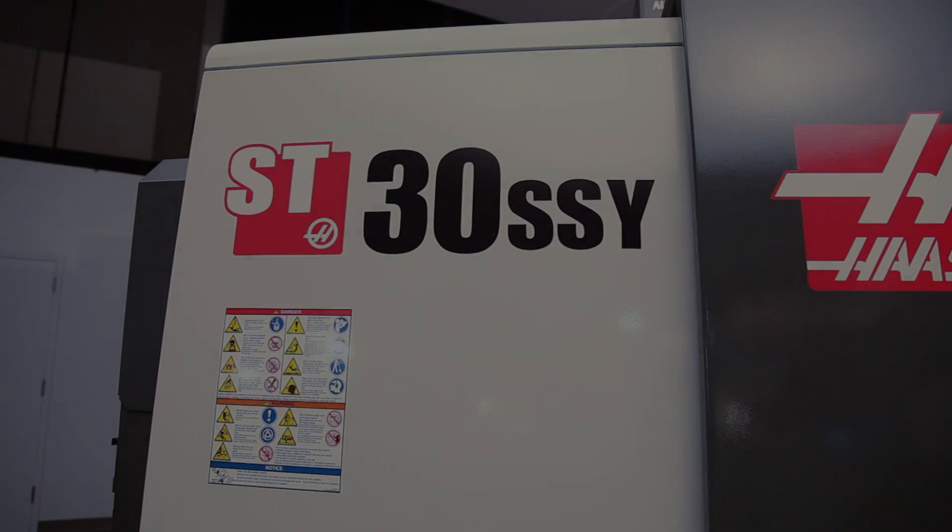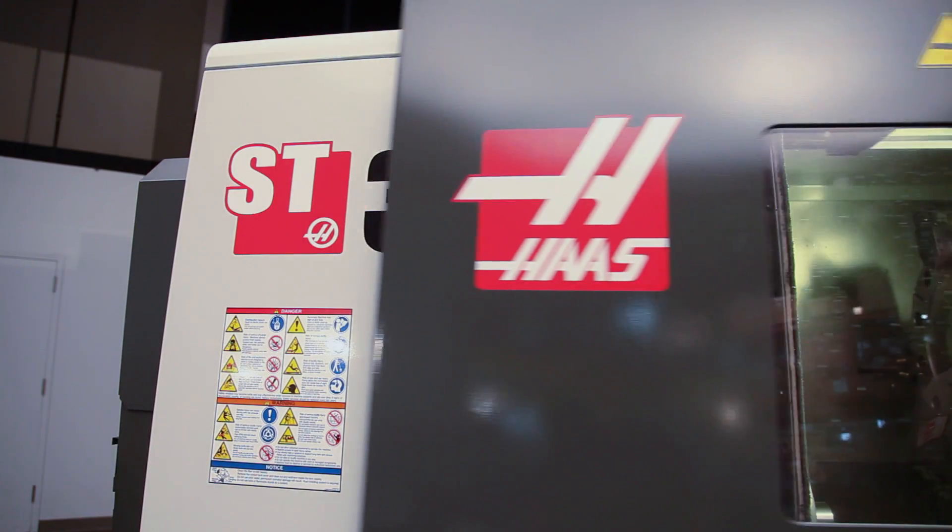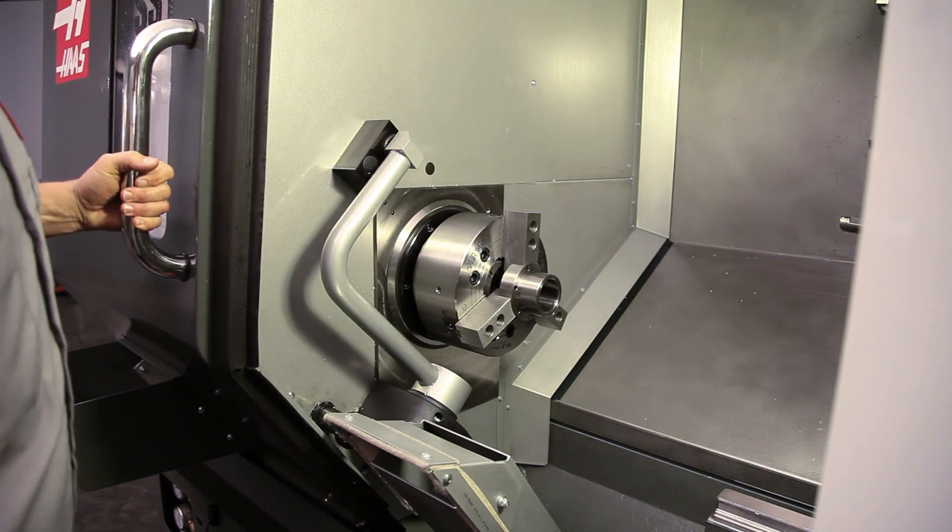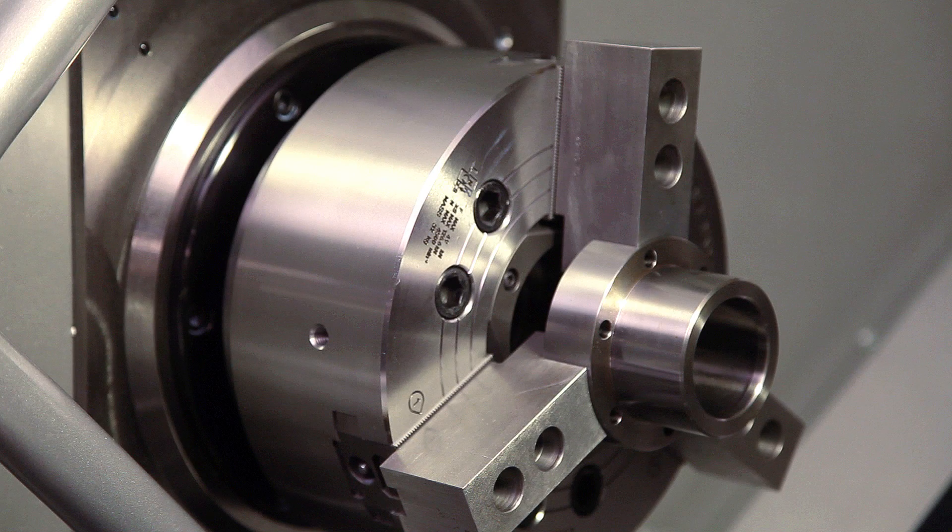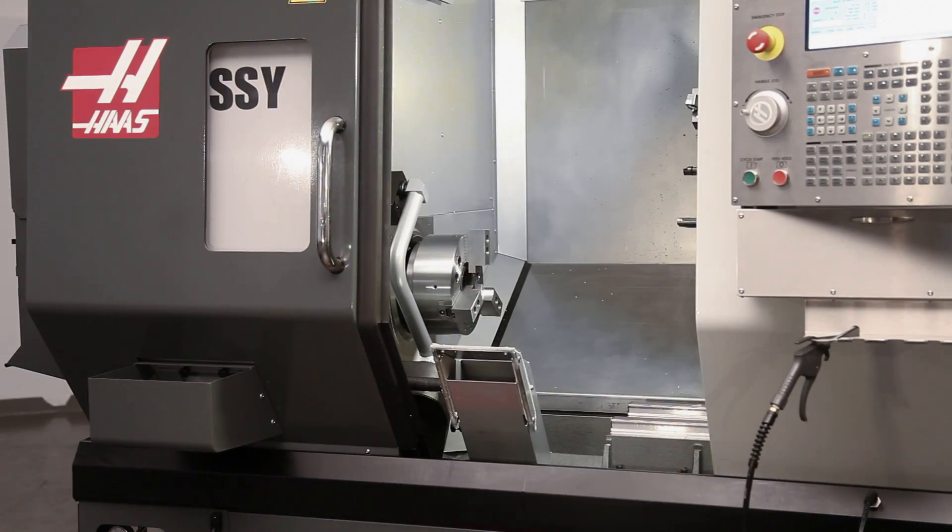Andrew plans to reuse the jaws that were originally cut to hold our bearing housing part. Since he knows that he'll be using these same jaws on this same machine with this same chuck in the future, there is no need to recut.